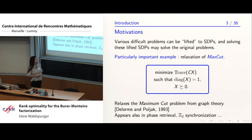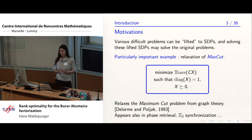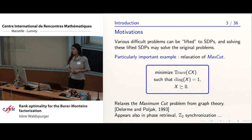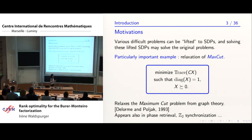Semidefinite programs arise in particular as relaxations of combinatorial optimization problems. It has been known for quite a while that many difficult optimization problems can be lifted — approximated in some sense — by semidefinite programs. And oftentimes, although the SDP is apparently only an approximation, it turns out that when you solve it, you get the exact solution of the original difficult problem.